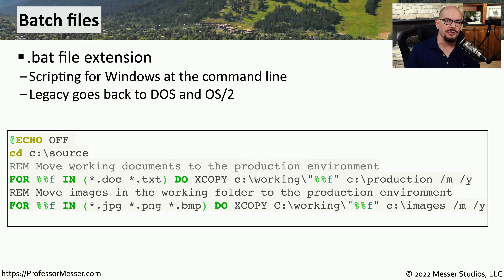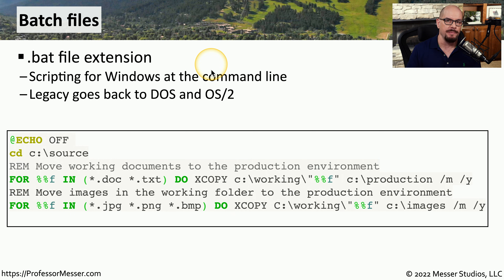The fundamental scripting language of Microsoft Windows is the batch file. This is sometimes written with a .bat file extension, and it allows you to script at the command line of Microsoft Windows. This type of scripting language has been around since the DOS and OS/2 days, so there's quite a bit of capability at the command line of Windows, and we can take advantage of those capabilities by using a batch file.